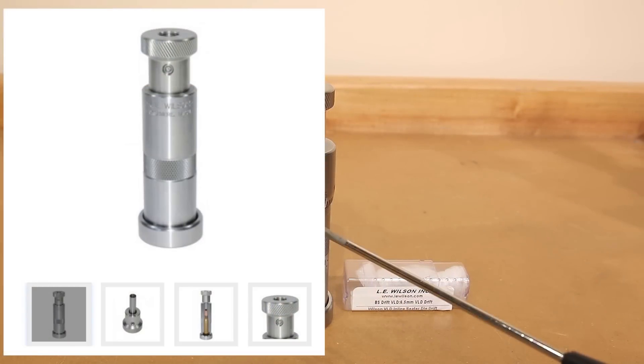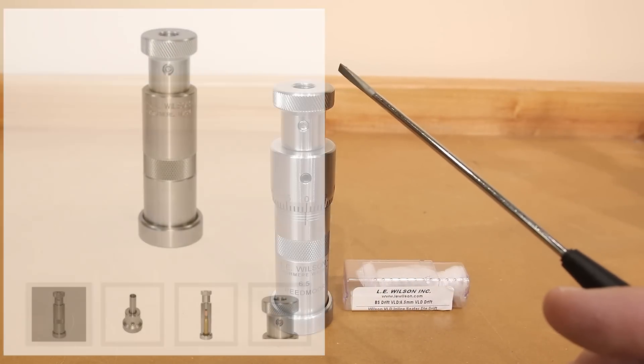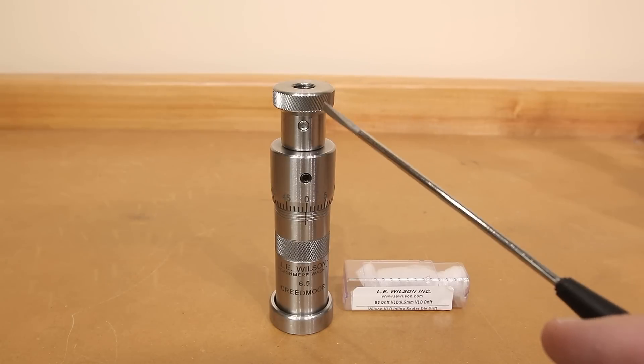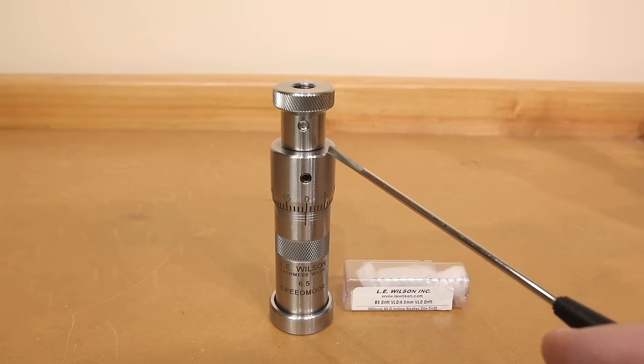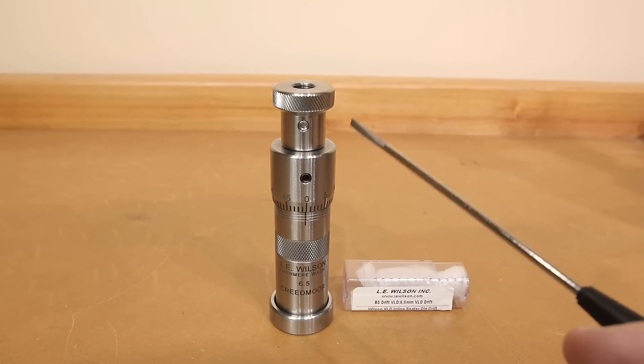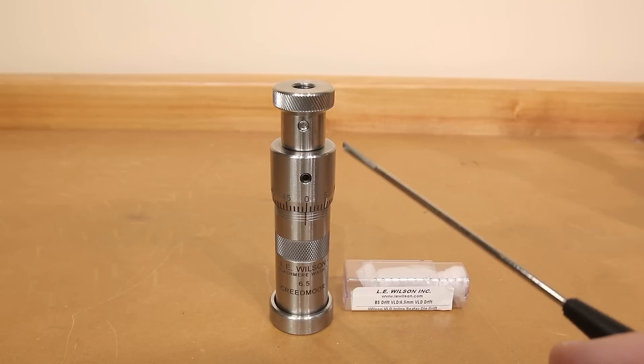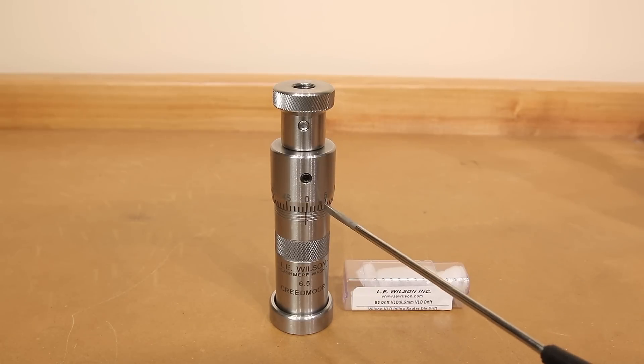There is a version of this die that does not come with the micrometer top. You can dial in the cartridge overall length with the stem. And with its 3824 TPI threads in the cap, one full revolution should change the cartridge overall length by about 42 thousandths. This version has the micrometer feature, and so we can see it's very well marked and very easy to dial in our adjustment.